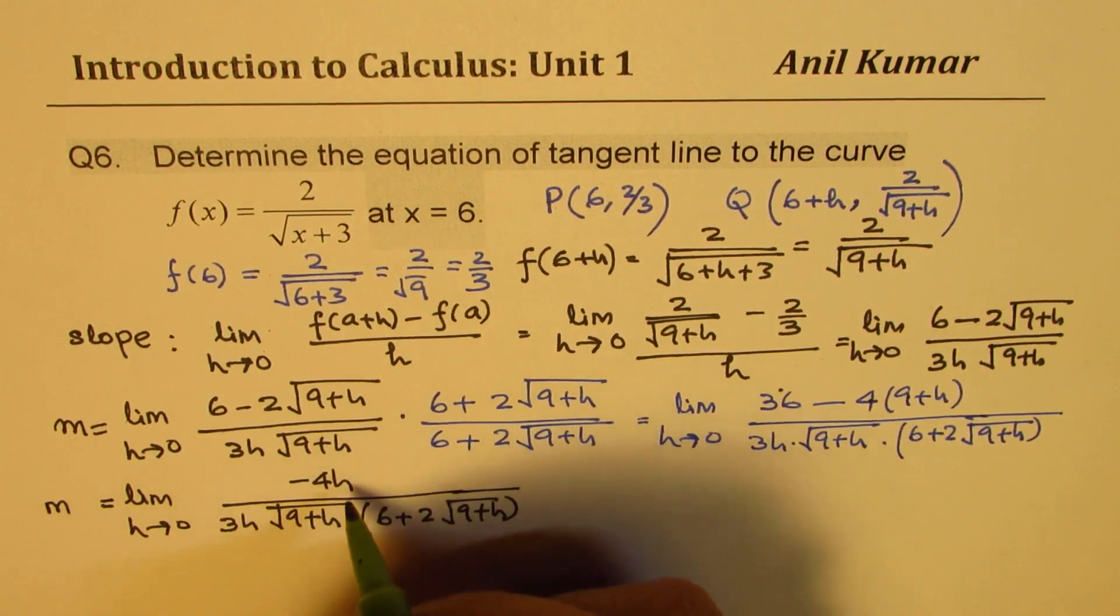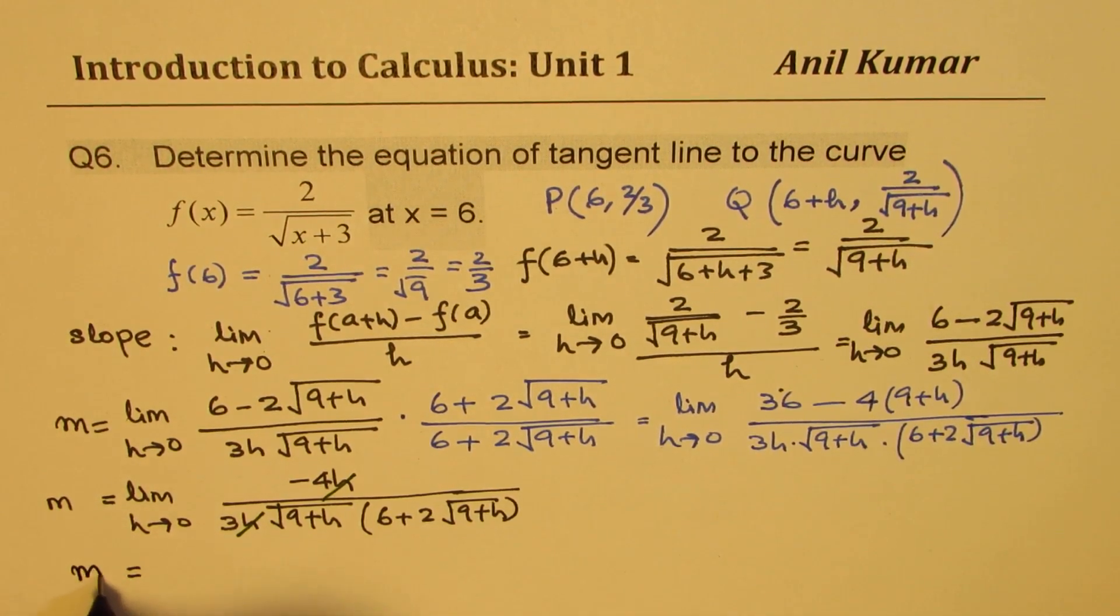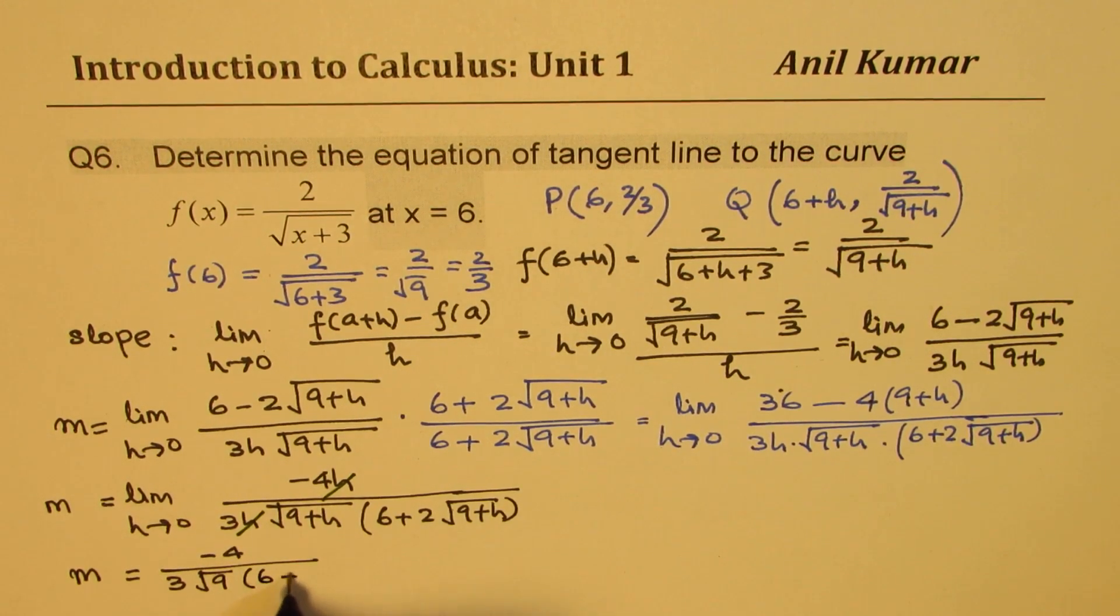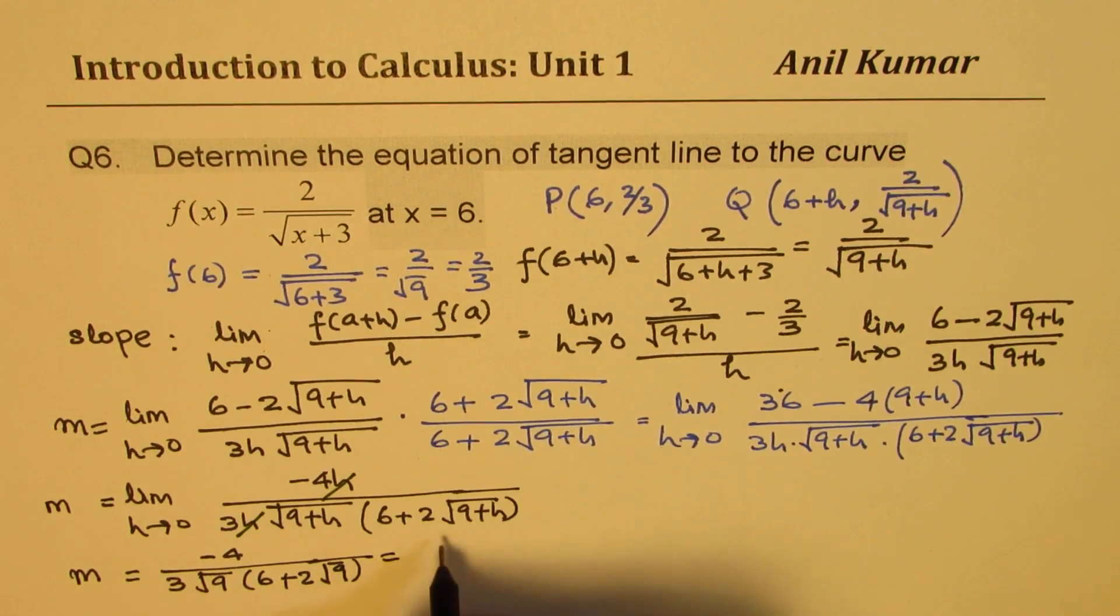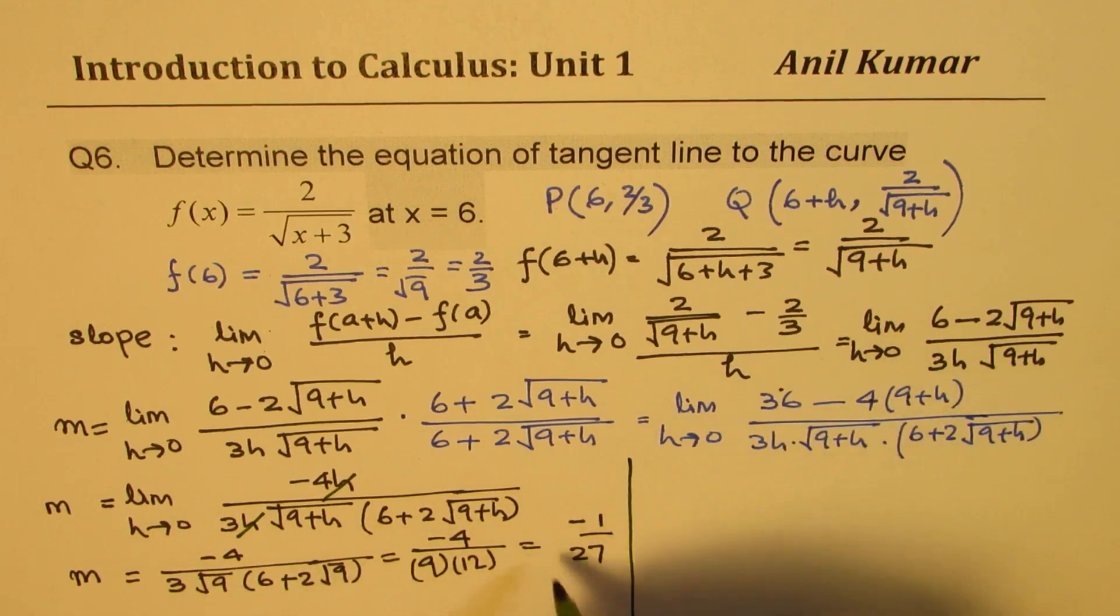Now you could cancel the h. Once you do that, then you can substitute the value of h and find the result. So the slope m, when you write 0 here for h, you get -4 over 3√9 times (6 + 2√9), which you get as -4 over, this is 3 times 3 as 9, and this is 6 plus 2 times 3 as 6 as 12. So 9 times 12. Now 12 and this can be simplified. So you get -1/27. So that becomes the slope at the given point.